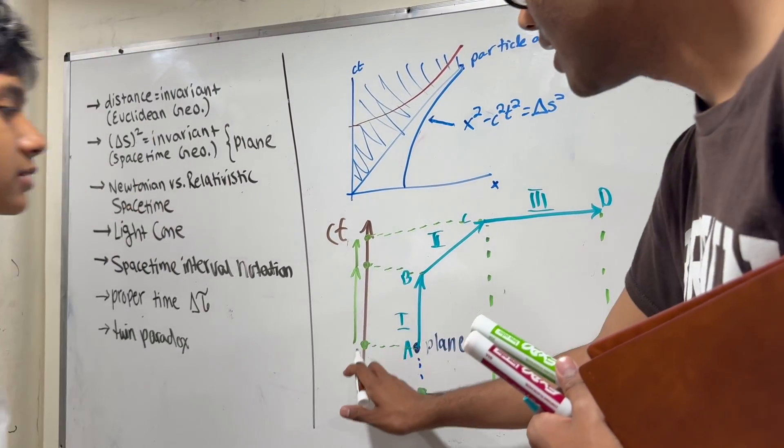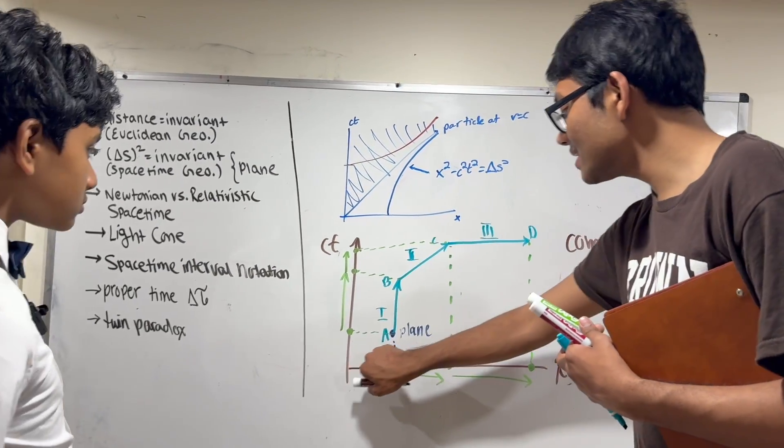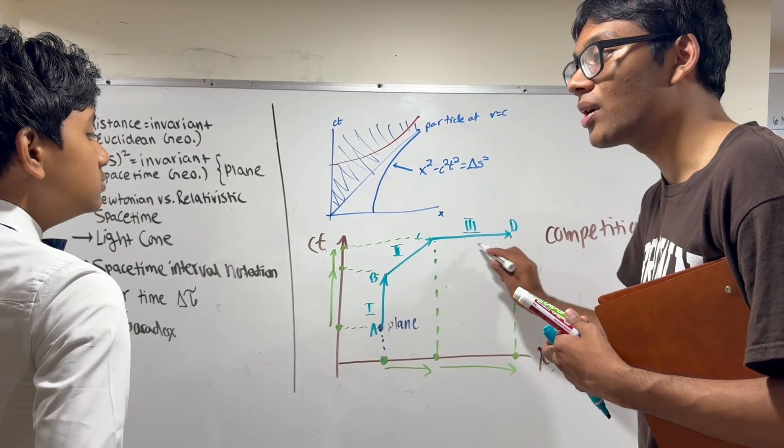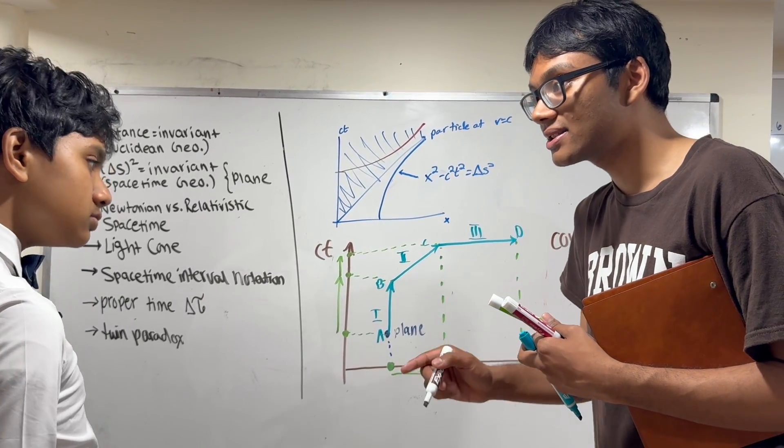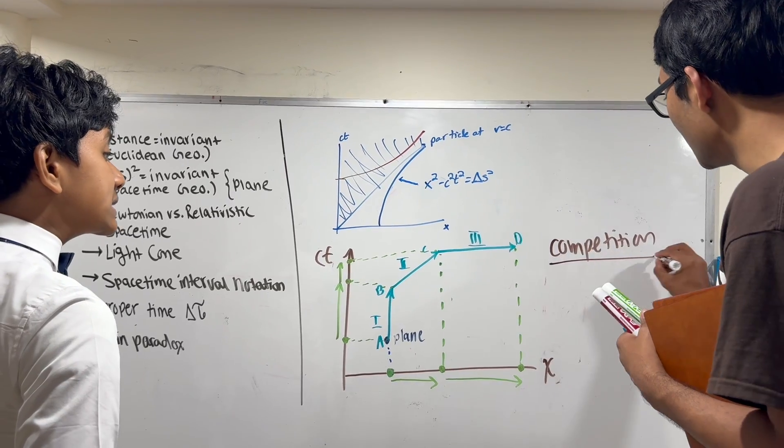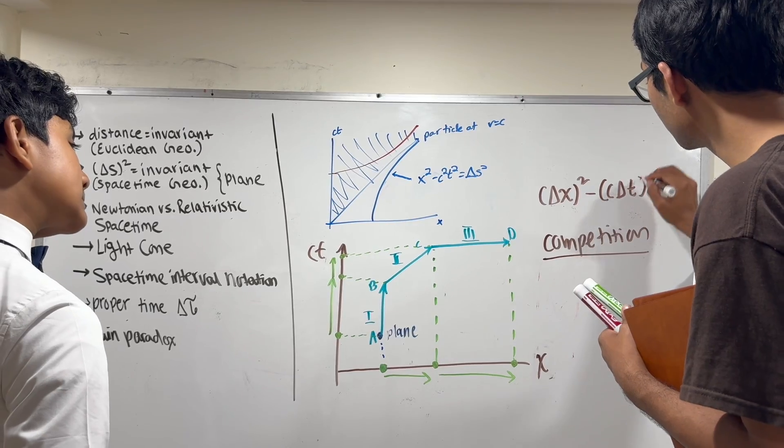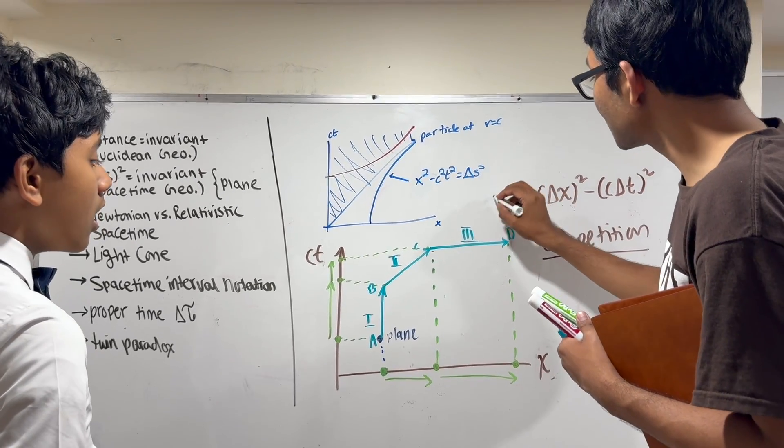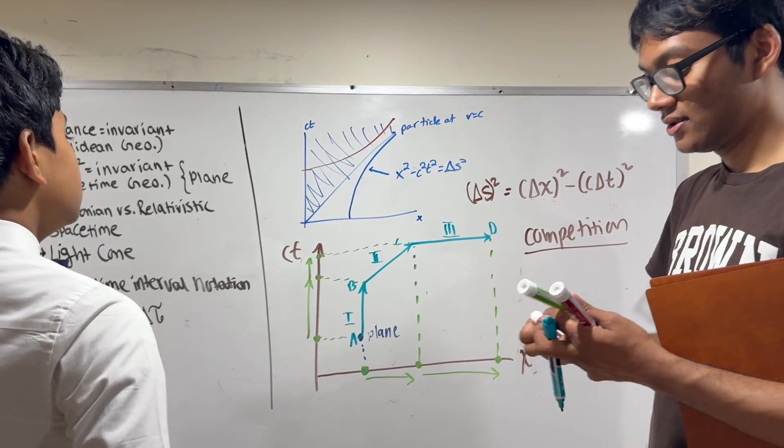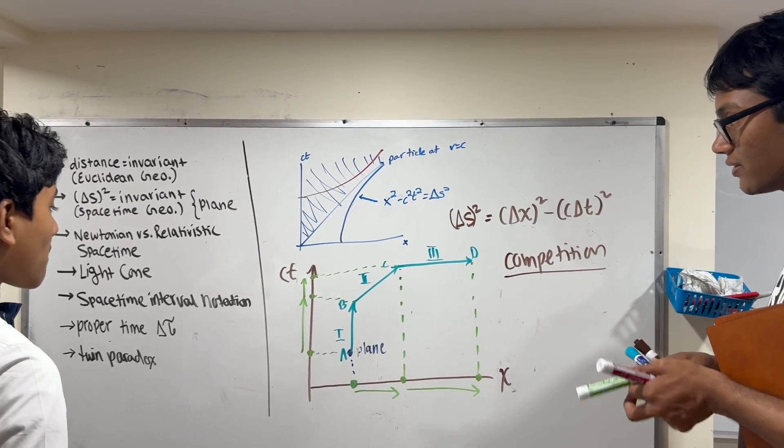So here in the time axis, it looks like the plane is decelerating. In the space axis, it looks like the plane is accelerating. Even though in reality, when you combine both, the plane is going at constant velocity. In other words, there's a competition between the space and the temporal parts of the plane's movement, giving us a constant space-time interval when you combine them. That gives you more intuition for the space-time interval.